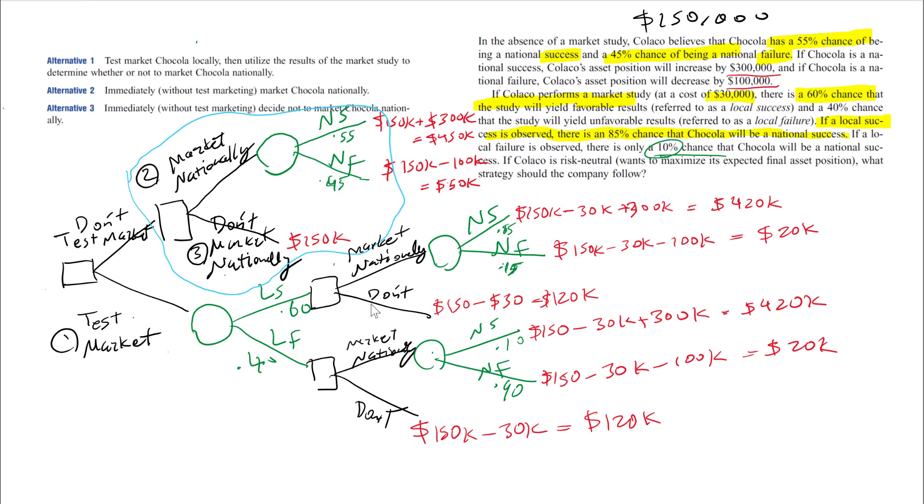All we have to do next is multiply each reward by the probability at event forks to get the expected value of that event node. For example, for this one down here I'm going to multiply 0.10, which is the probability of national success, by 420K plus 0.90 times 20K. That gives me the expected value of this event.